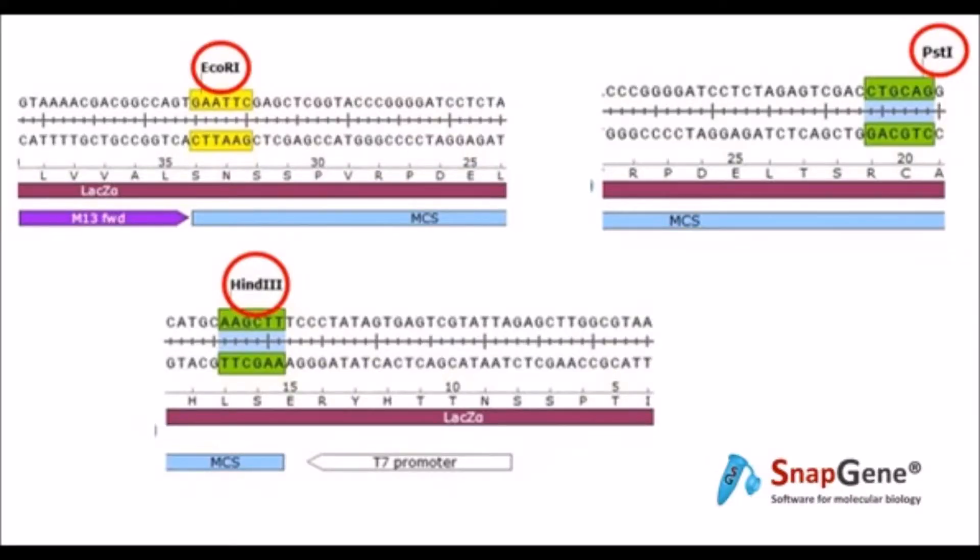Two different sequences were used during the practical being the pTZ19R plasmid and the lambda phage. The plasmid with 2,862 base pairs in length was submitted to three different digestions: EcoRI, PstI, and HindIII.